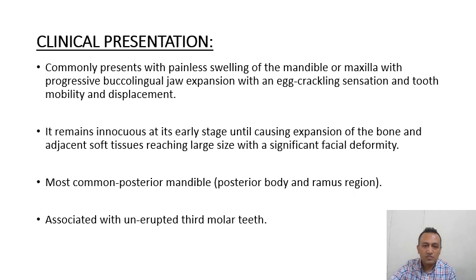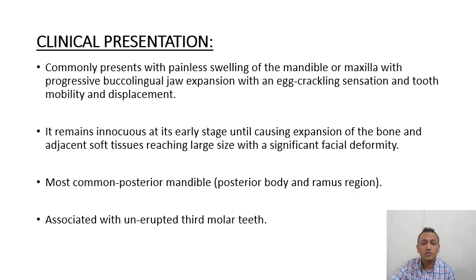Clinically they present as a painless swelling of the mandible or maxilla with progressive buccolingual jaw expansion, an egg-crackle sensation, and tooth mobility and displacement. It occurs inoculously in early stages until causing expansion of the bone and adjacent soft tissue, reaching large size with significant facial deformity. Most commonly it occurs in the posterior mandible — posterior body and ramus region — associated with unerupted third molar.